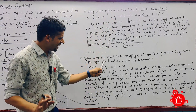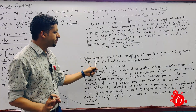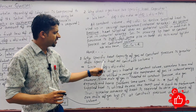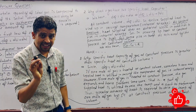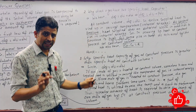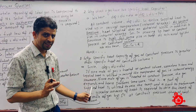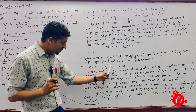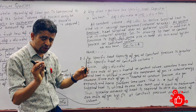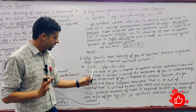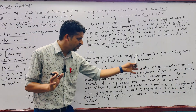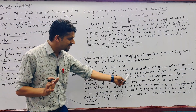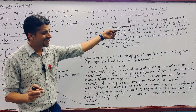Question 3: Why is specific heat capacity at constant pressure greater than specific heat capacity at constant volume? Since dQ = dU + dW according to the first law of thermodynamics, if one mole of gas is heated at constant volume, the work done is zero and the supplied heat is entirely used in raising the temperature of the gas, i.e., increasing internal energy.